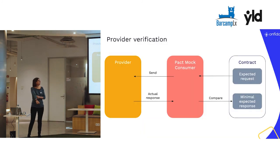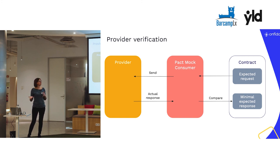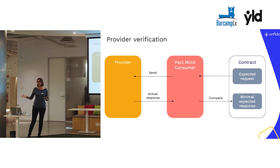When you test the provider, the test is initiated by the mock consumer, which is also provided by PACT. It will get the expected request from the contract and send it to the provider. The provider will reply accordingly with an actual response. And the mock consumer will compare the response received with whatever is in the contract. Again, the tests will only pass if all steps complete successfully.